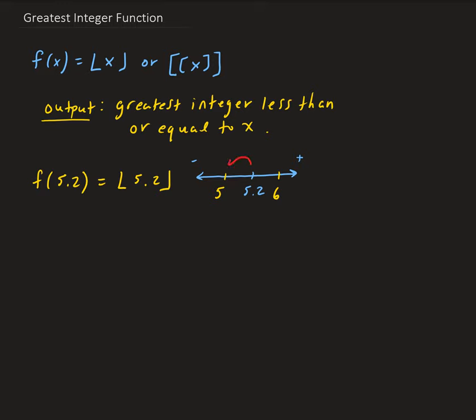You always go back to the previous integer, unless the input value is an integer — then the output will just be that integer. For example, if we evaluate the function at 3: since 3 is an integer and the definition says less than or equal to, the output will just be 3.